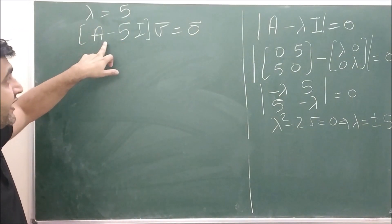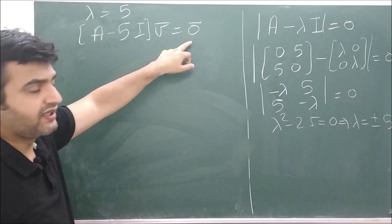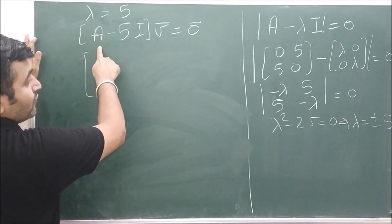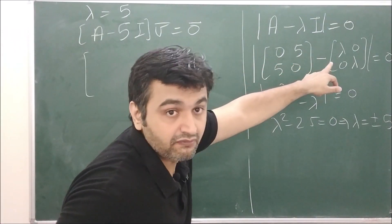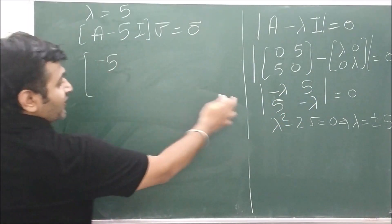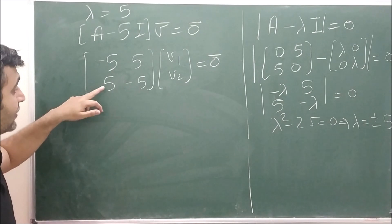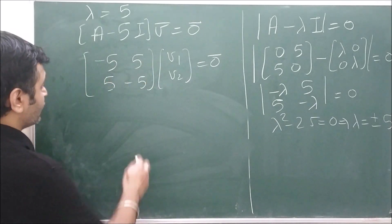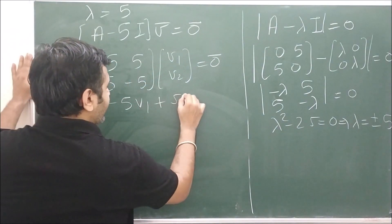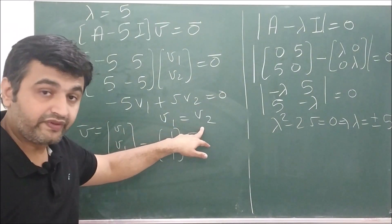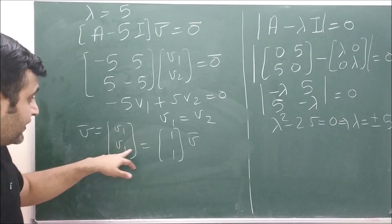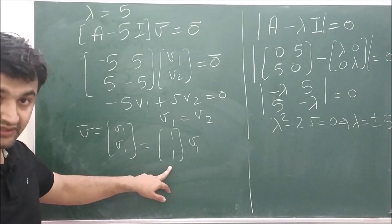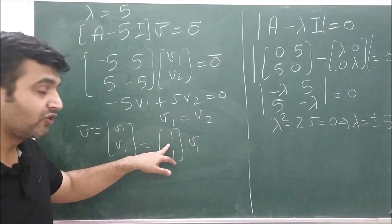For λ = 5, you solve (A − 5I)·v̄ = 0̄. Substituting A and putting λ = 5, you get the matrix. Applying row operation R2 + R1, the second row becomes zero, so you only have the first row: −5v1 + 5v2 = 0, which gives v1 = v2. Therefore v̄ = v1·[1, 1]ᵀ, so the linearly independent eigenvector for λ = 5 is [1, 1]ᵀ.